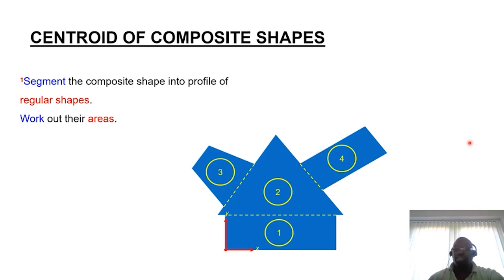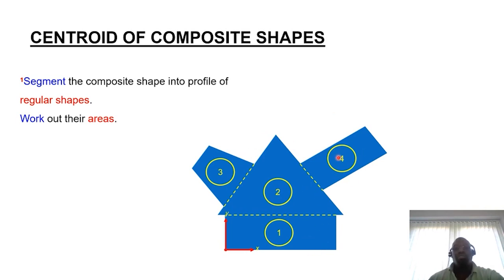The second thing we need to do is work out the areas of the individual segmented forms — the area of form one, form two, form three, and likewise for form four. Standard formulas can be used to easily work these out. If you know the area of a triangle, area of a rectangle, area of a parallelogram, area of a trapezoid — very easy to predict.